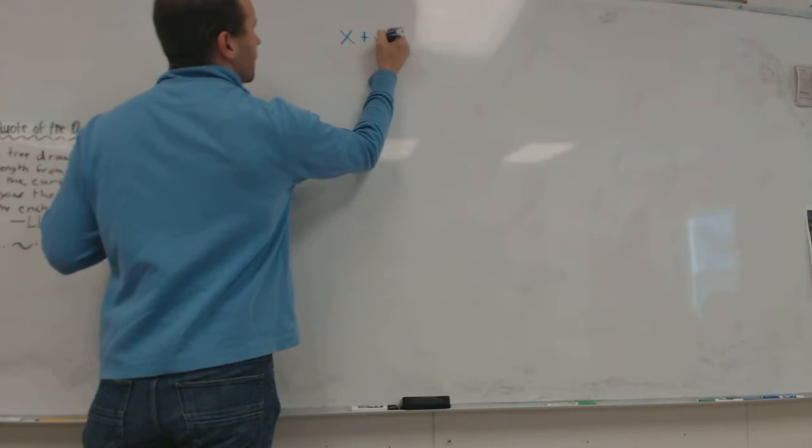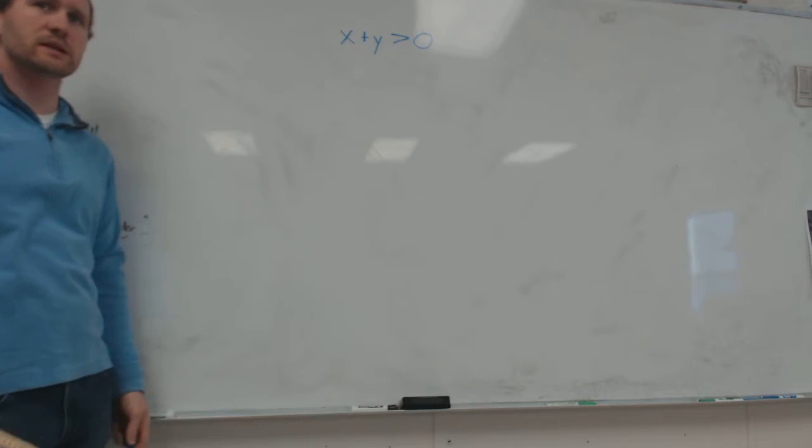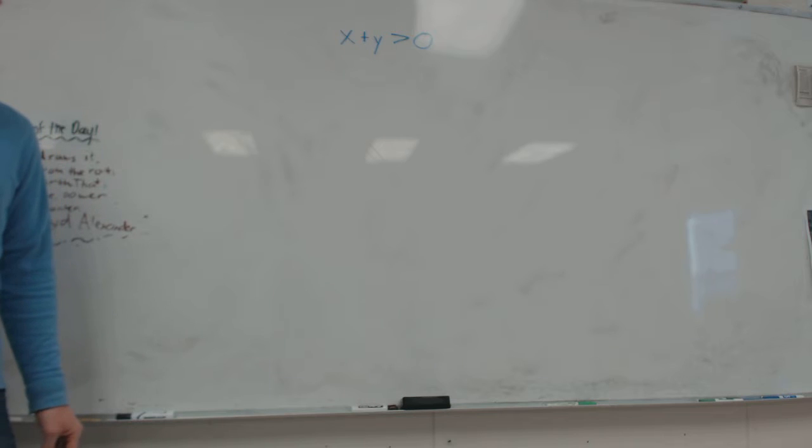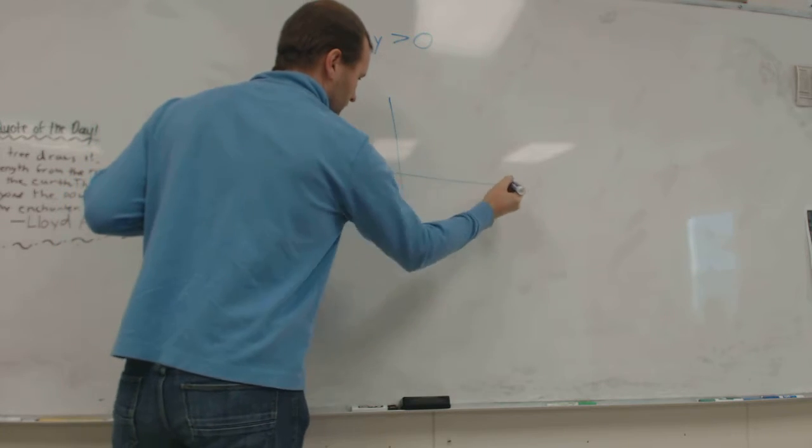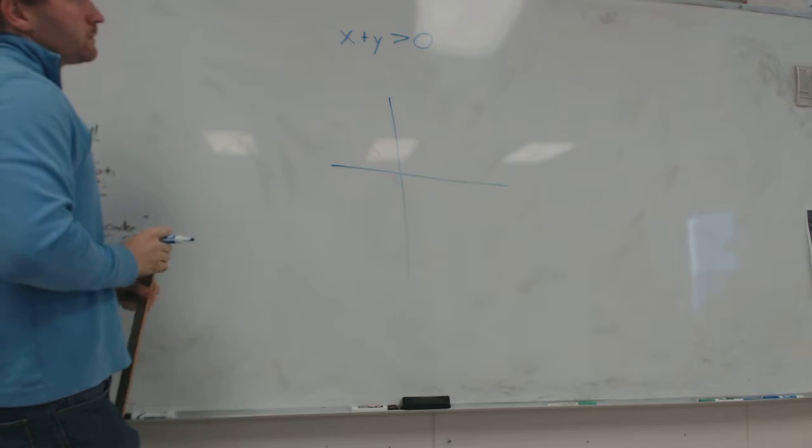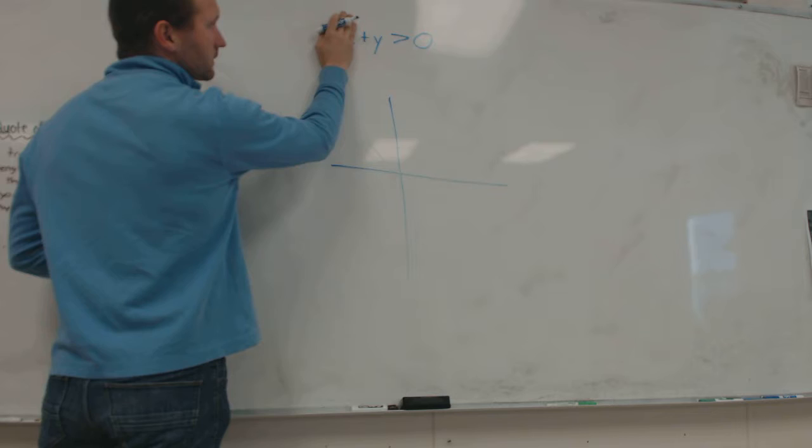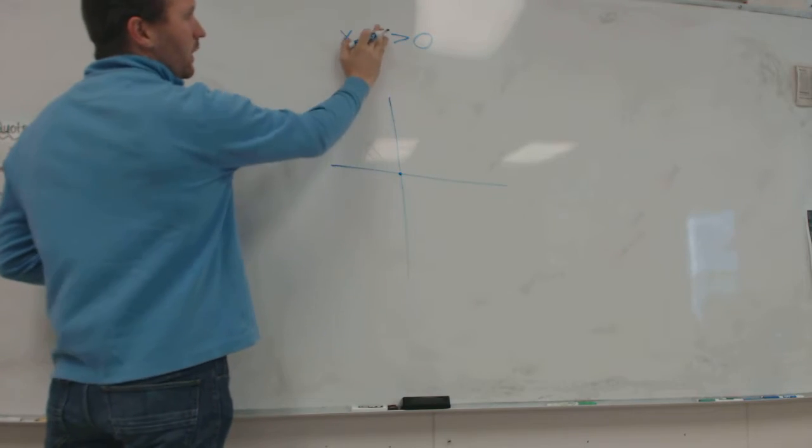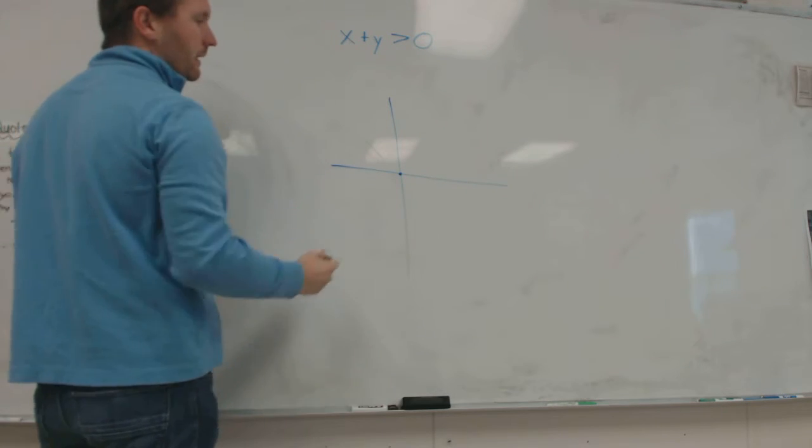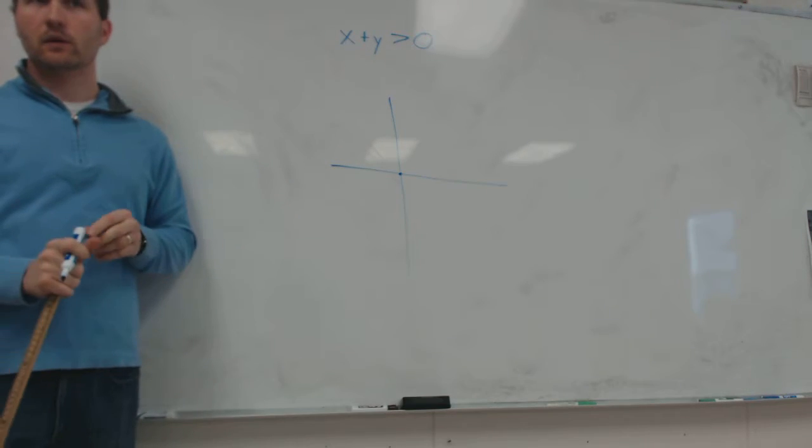But what if we had something like this? x plus y is greater than 0. So now we have standard form with x and y on the same side. Right? Yeah. So if I wanted to graph this, normally what I would do is I'd cover up my x and find what y is. 0. Cover up my y and find what x is. But I don't have two points. So I can't make a line that way.